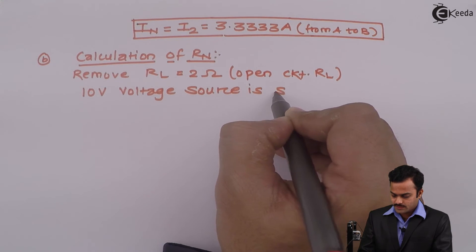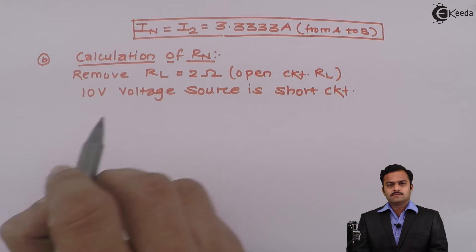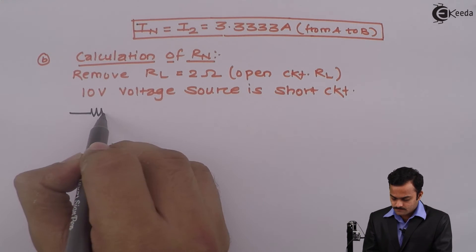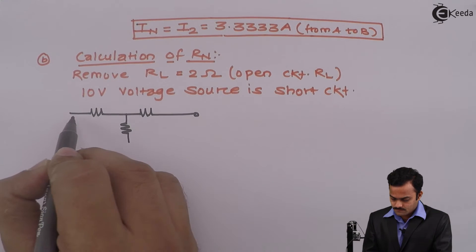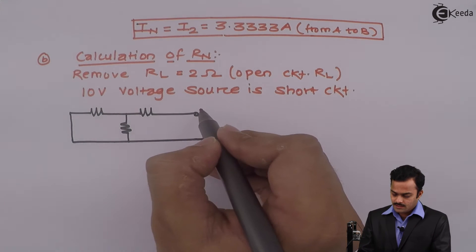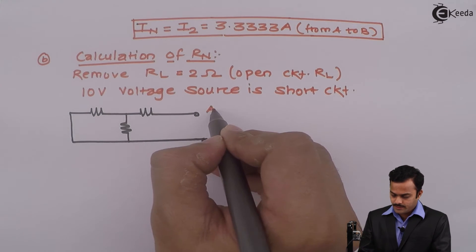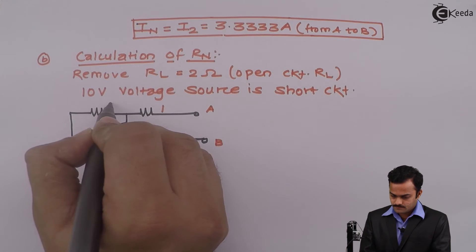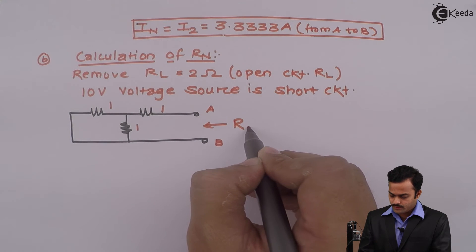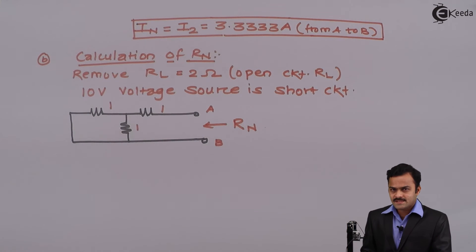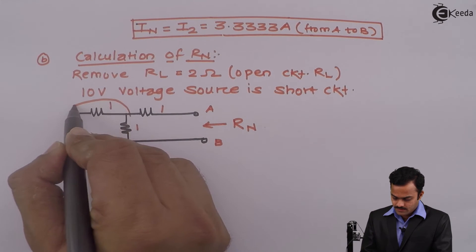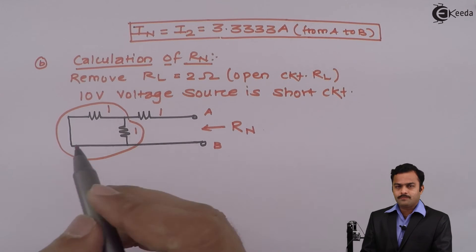So we will get a circuit like this. 10 volt voltage source, if I remove RL I will get terminals A and B. Now across these terminals we are supposed to find out RN using series parallel combination. So here it's very easy, this one ohm and this one ohm are in parallel.